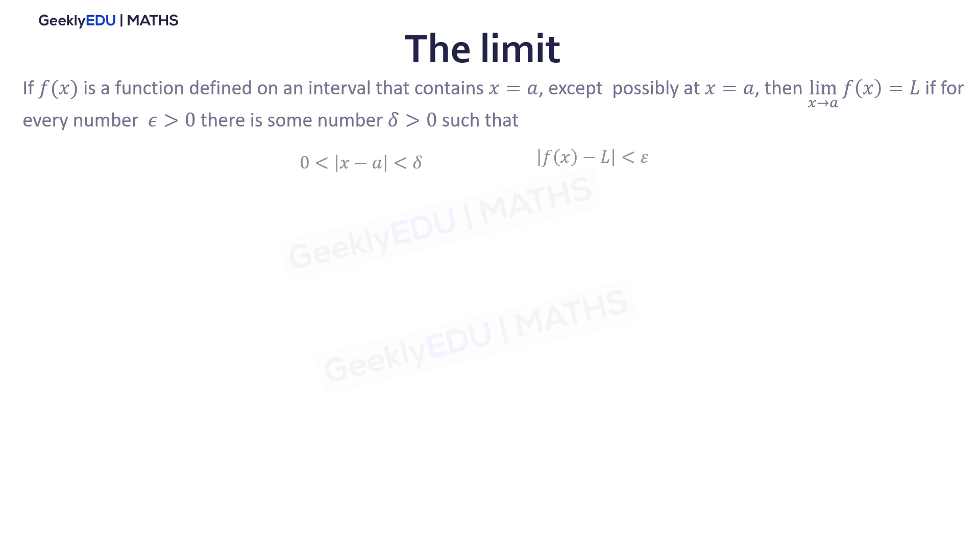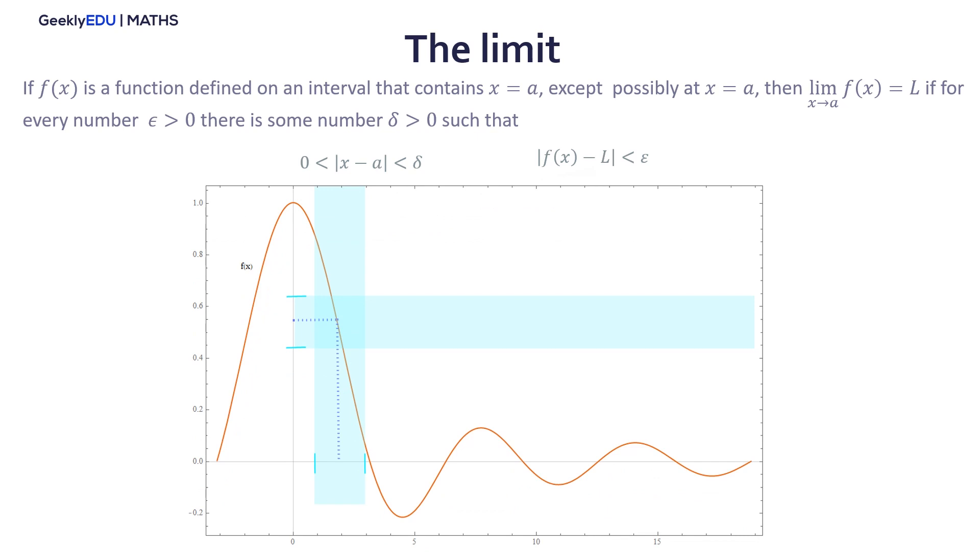It is easier to understand this concept if we see the graph. In the x-axis, we have an interval a minus delta to a plus delta. This interval contains the value a. In the same way, we have an interval in the y-axis from l minus epsilon to l plus epsilon, and this interval contains the number l. We can see that when delta takes a smaller value, the interval is smaller, and then is when x approaches to a.